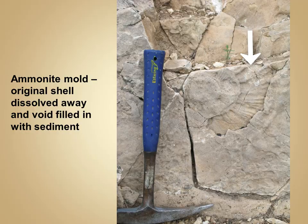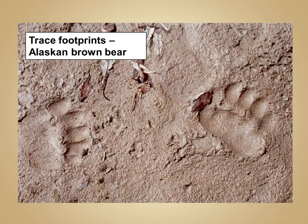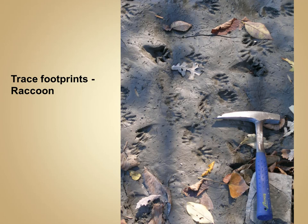Trace fossils are a unique type of fossil where the actual organism is not preserved. Instead, what is preserved is a trace of the organism's activity. For example, in this photograph we see the trace footprints of an Alaskan brown bear — the actual bear has not been preserved, only its footprints as it walked across the mud. Likewise, here we see trace footprints of an animal along a riverbank — in this case a raccoon — and you can see that it had spent quite a bit of time walking around.